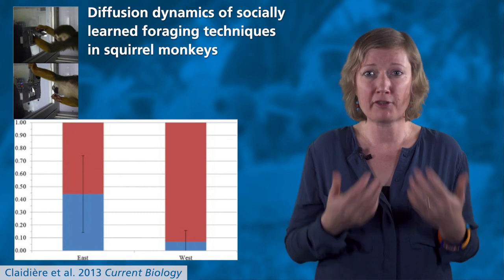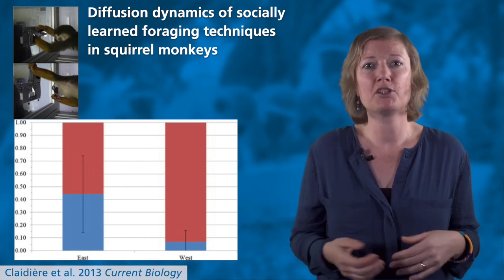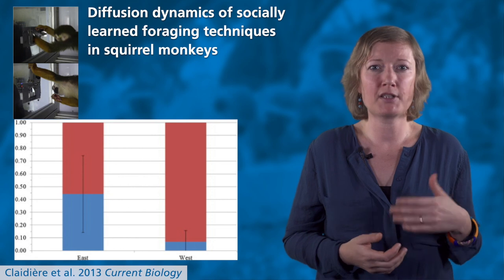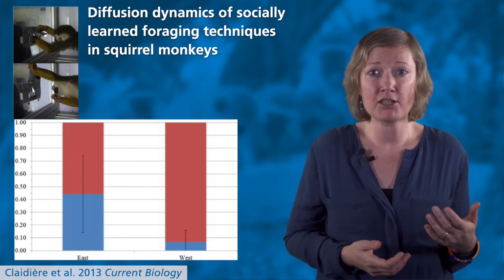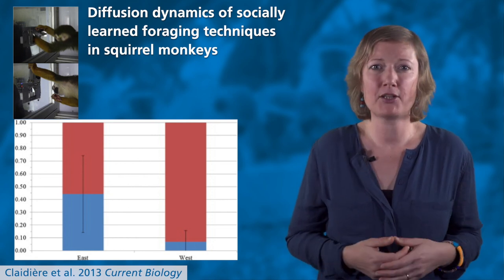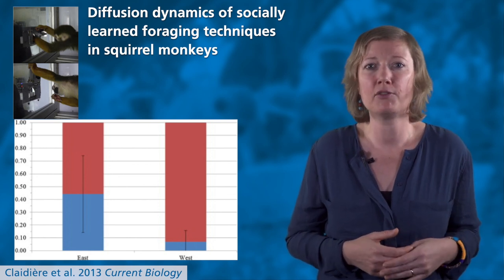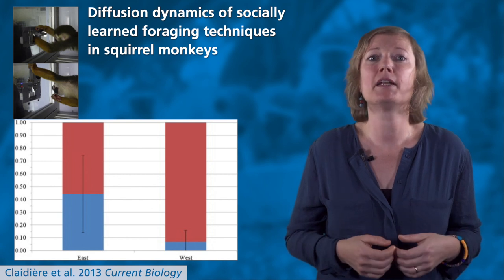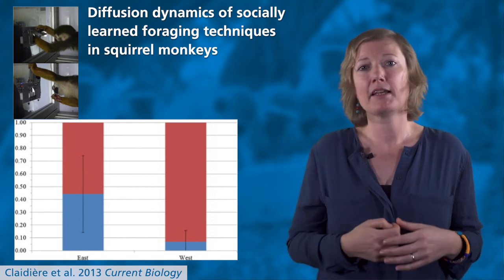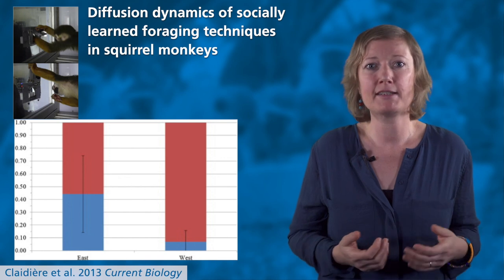This study showed that the two techniques spread preferentially in the groups in which they were initially seeded, and that this process was influenced by monkeys' association patterns. Centrality measures extracted from the social network predicted both the speed with which an individual would first succeed in opening the artificial fruit, and the probability that they would acquire the cultural variants seeded in their group. These findings demonstrated a positive role of social networks in determining how a new foraging technique diffuses through a population.